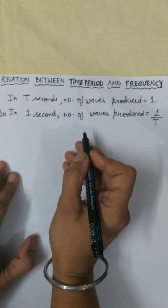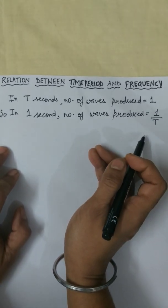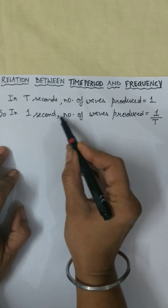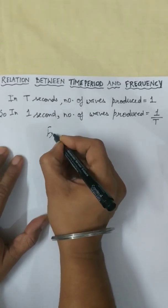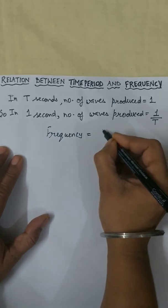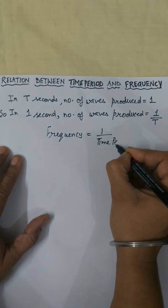Now, as we know that in one second, number of waves produced is known as frequency of that wave. So instead of this sentence, what we can write? That is, frequency is equal to 1 upon T, or 1 upon time period.